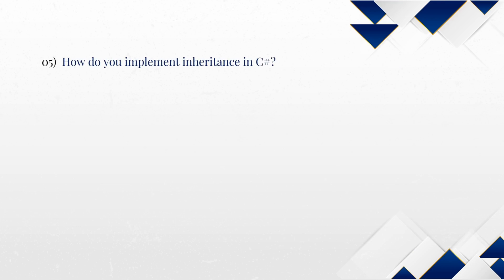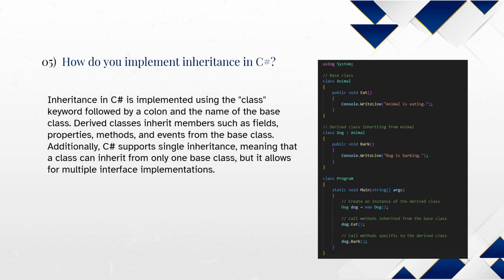How do you implement inheritance in C-Sharp? Inheritance in C-Sharp is implemented using the class keyword followed by a colon and the name of the base class. Derived classes inherit members such as fields, properties, methods, and events from the base class. Additionally, C-Sharp supports single inheritance, meaning that a class can inherit from only one base class, but it allows for multiple interface implementations.